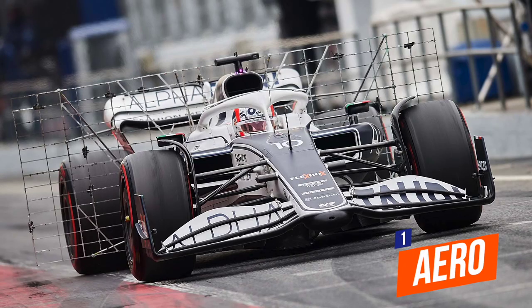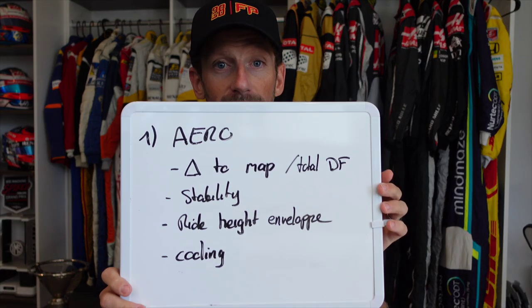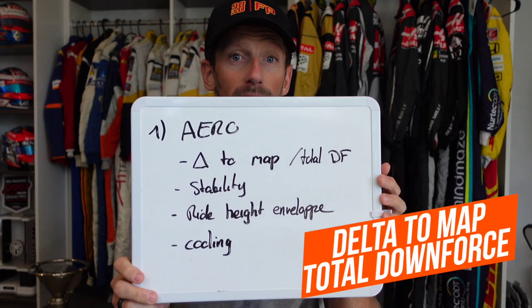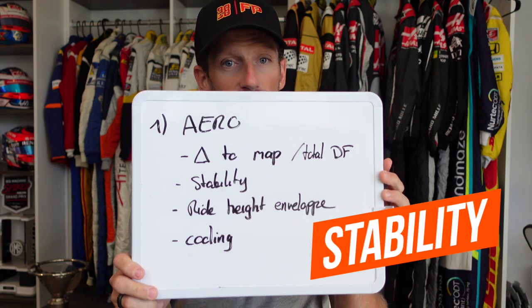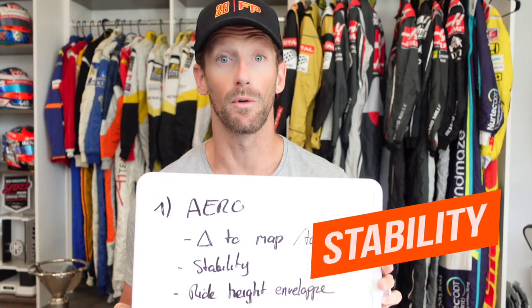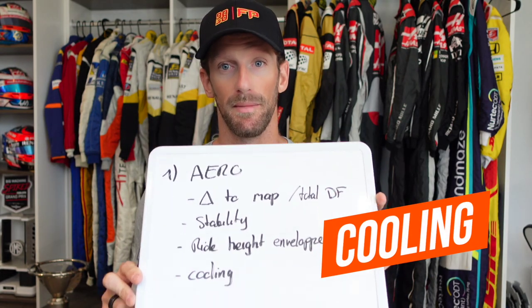Aero — what do we speak about when we talk aero? Aero point number one has got delta to map, total downforce. We've got stability, ride height envelope, and the last point: cooling. So let me go through those four points. Delta to map, total downforce.